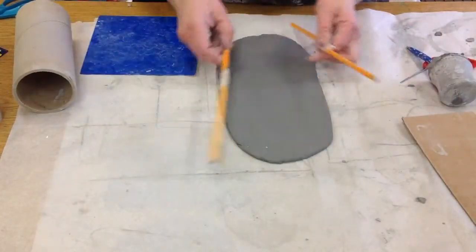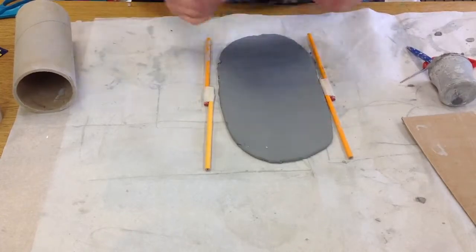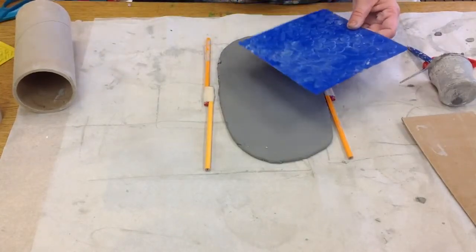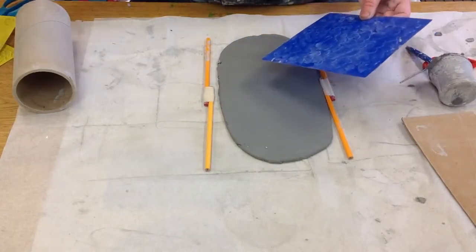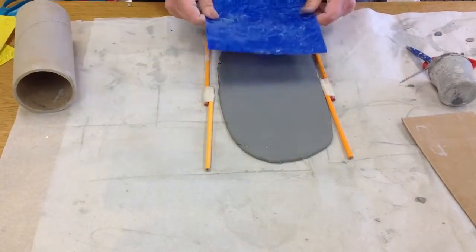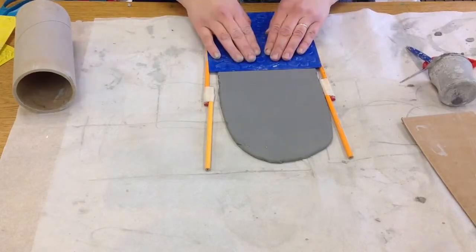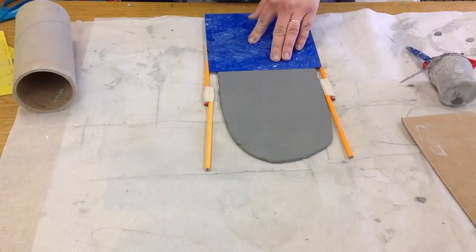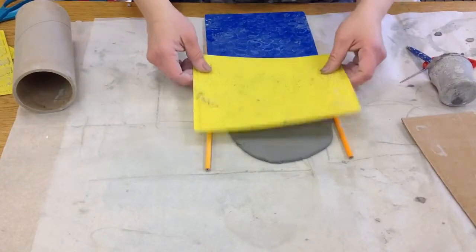And then what you're going to do is you're going to pick out some textures. And I have these textures right here that you're going to use. And you can do it like a quilt, like a quilted pattern, or you can do it all as one texture.